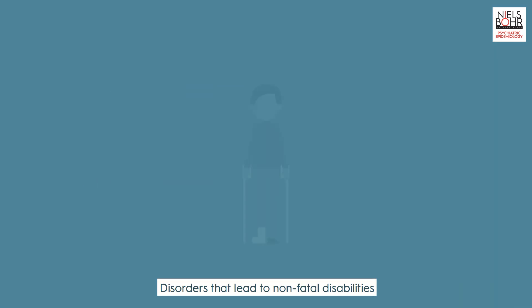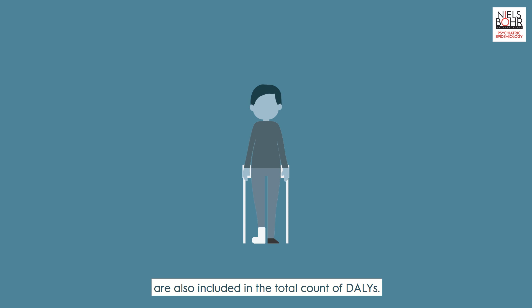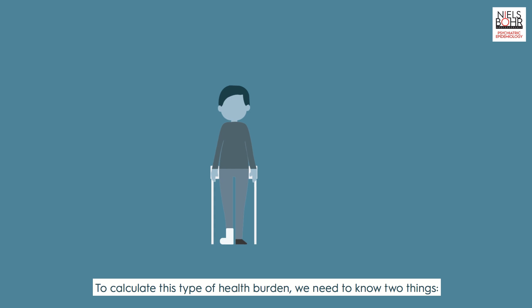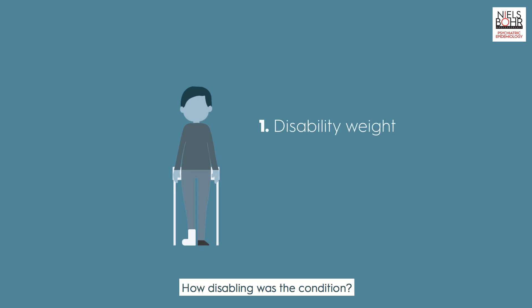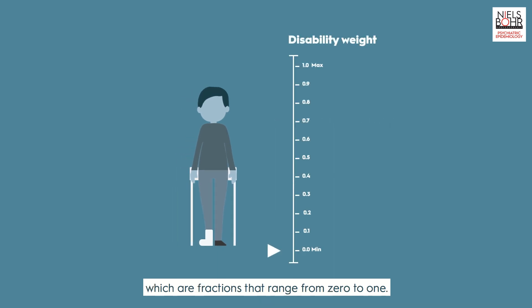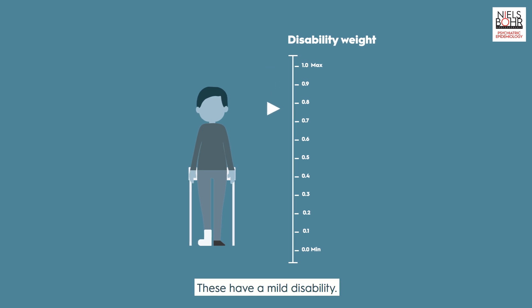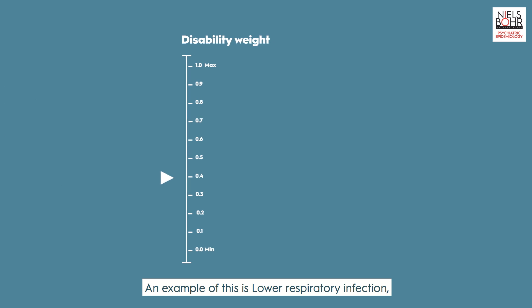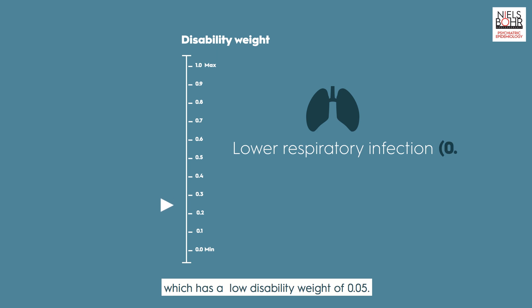Disorders that lead to non-fatal disabilities are also included in the total count of DALYs. To calculate this type of health burden, we need to know two things: how disabling was the condition, and how long did it last for? First, let's look at the concept of disability weights, which are fractions that range from 0 to 1. Some disorders do not interfere greatly with daily life — these have a mild disability. An example is lower respiratory infection, which has a low disability weight of 0.05.